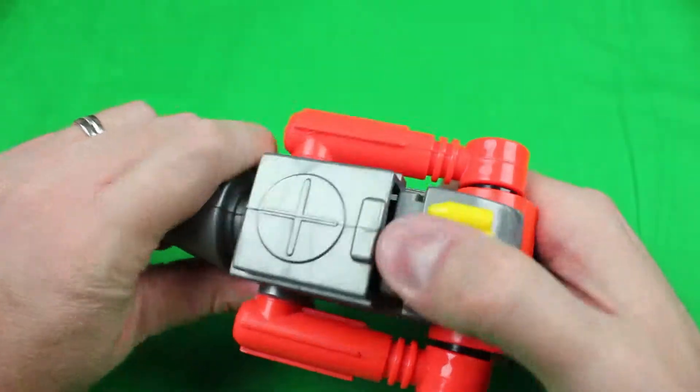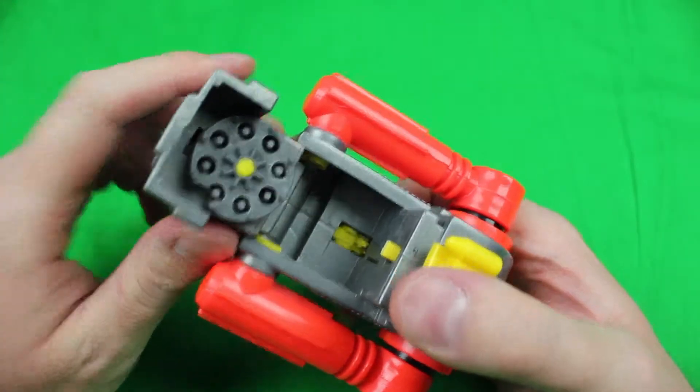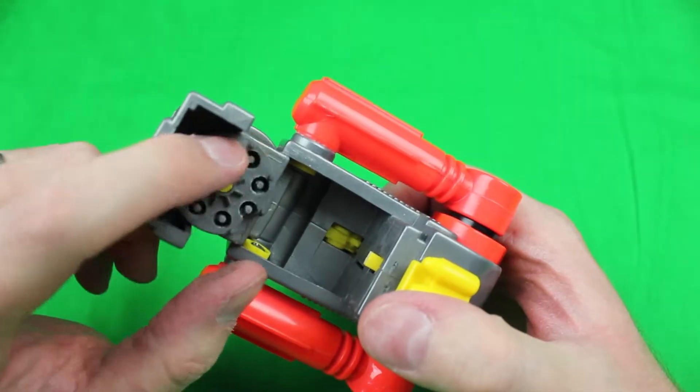And here's where you load the ring caps. If you have ring caps, I think you can still buy some at Walmart. So you just load in your ring caps, close them up and there you go.